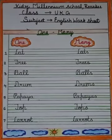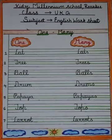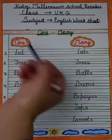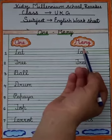Hello my dear kids, I hope you all are fine. Today's English topic is one and many. One ka matlab hota hai ek aur many ka matlab hota hai ek se zyada ya bohut sare. So my dear kids, this is one and this is many.